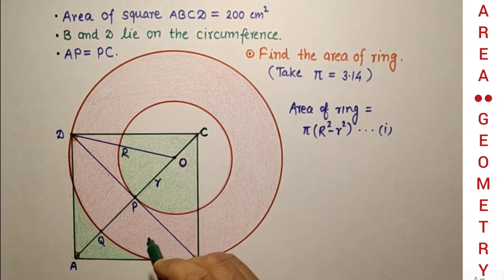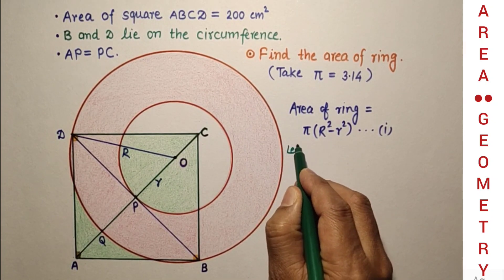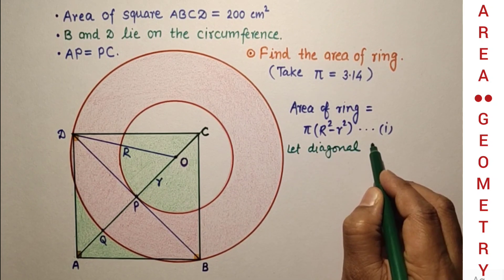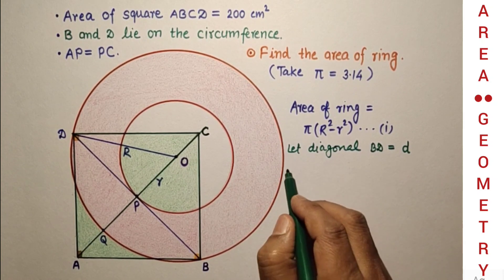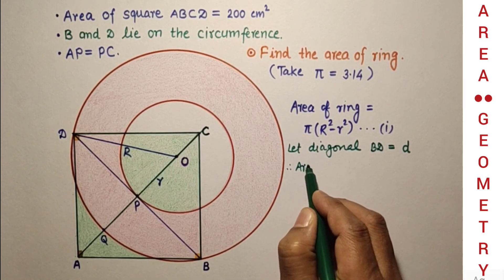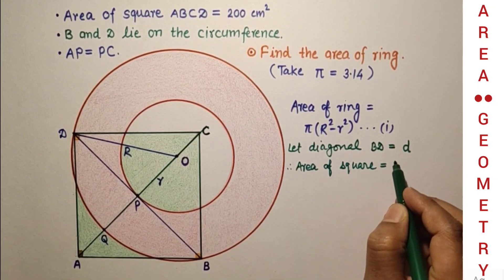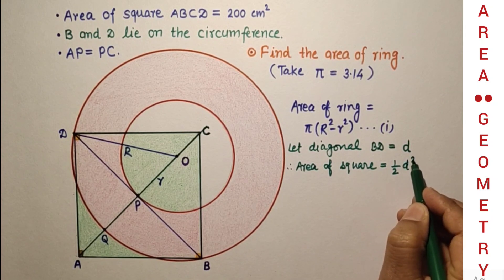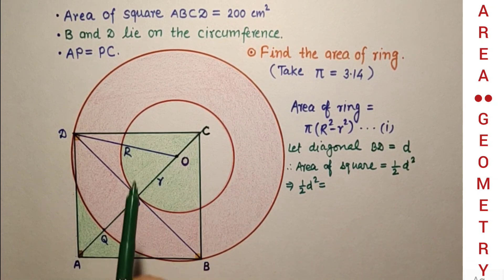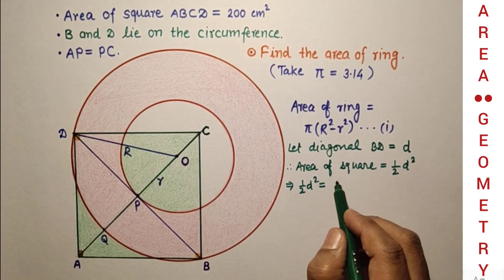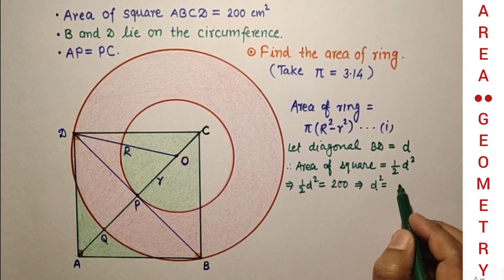Now let the diagonal of this square AC or DB, let diagonal BD be d. Therefore, area of square will be ½d² = 200. So d² = 400.